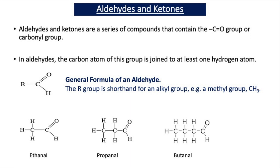In our previous videos, we've discussed the fact that aldehydes and ketones are a series of compounds that contain the C double bond O group, or a carbonyl group. In aldehydes, the carbon atom of this group is joined to at least one hydrogen atom, and the general formula of an aldehyde is R–C(=O)H, where R is shorthand for an alkyl group, such as a methyl group, a CH3 group.